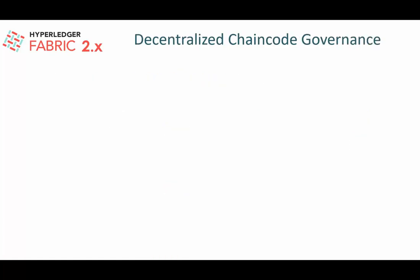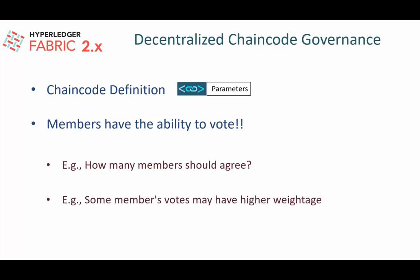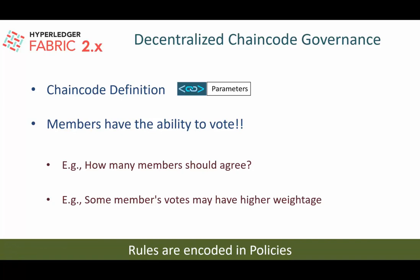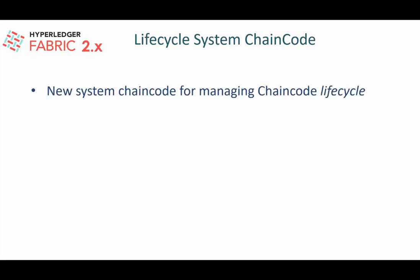Fabric 2.x has introduced decentralized chaincode governance — a big change in how chaincode is installed and instantiated. A chaincode definition consists of two parts: the chaincode implementation of the specifications, and a set of parameters. Channel members now have the ability to vote on whether they agree with the chaincode definition. Depending on the rules, the chaincode may or may not become deployable. Rules such as how many members must agree, or whether some members' votes carry higher weight, are encoded in policies that become part of the channel definition and are applied at runtime during deployment requests.